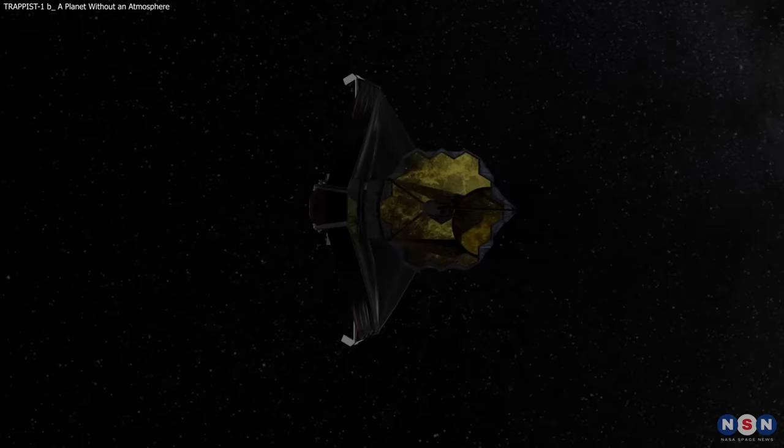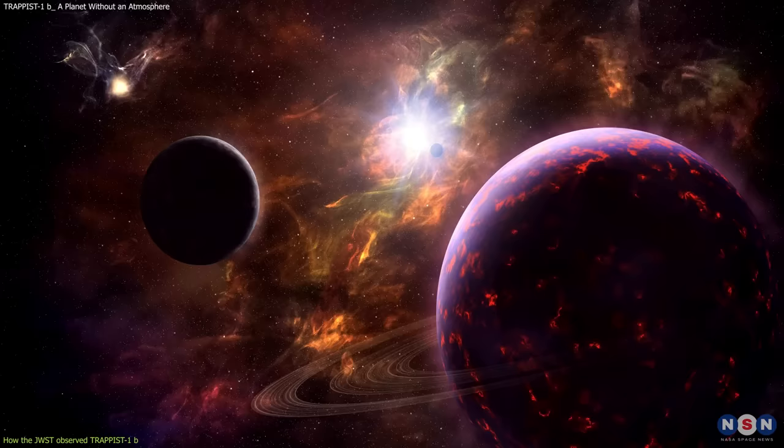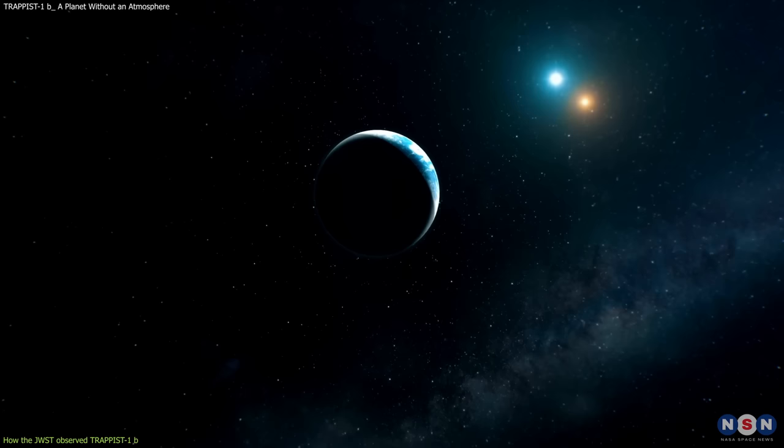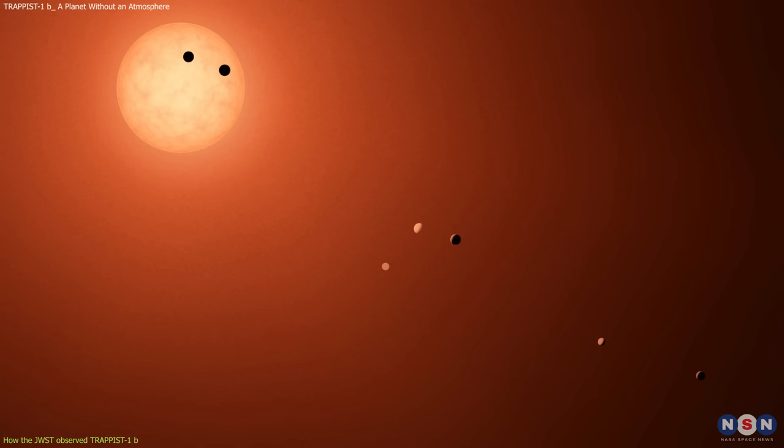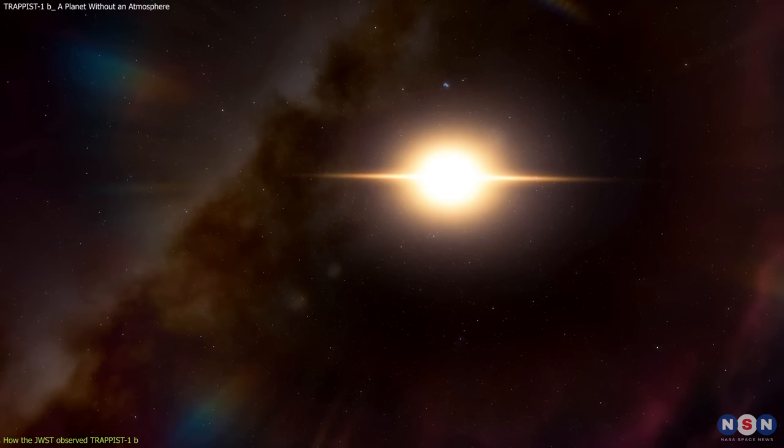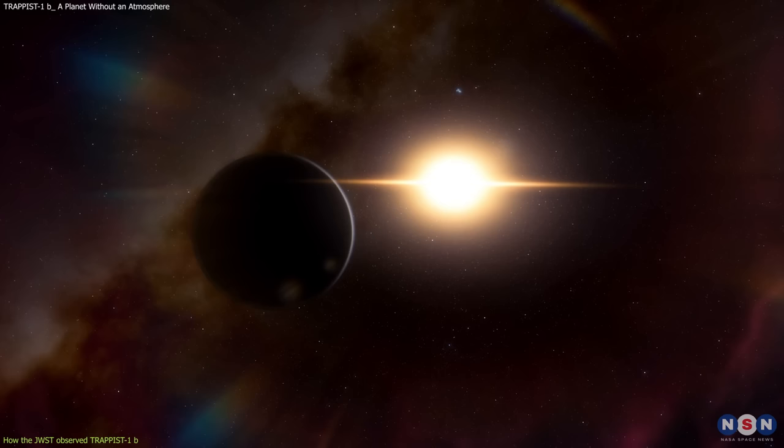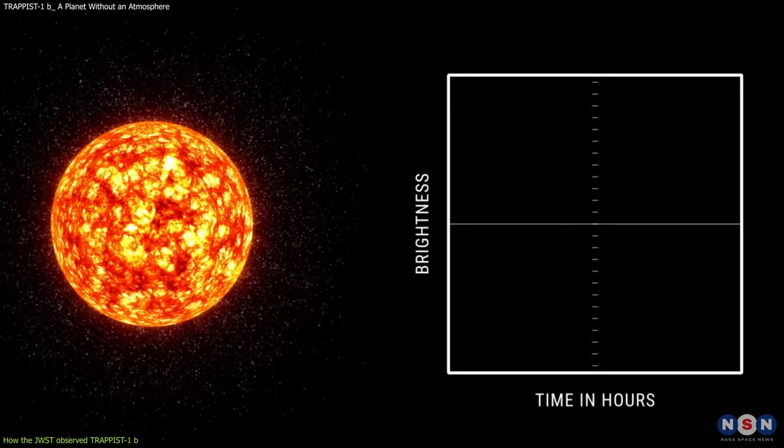One of the main goals of the JWST is to study exoplanets, which are planets outside our solar system. These planets are very hard to detect and observe because they are very faint and far away, and because they are usually outshone by their host stars. To overcome this problem, astronomers use different techniques to isolate the light from the planets, such as transit spectroscopy.